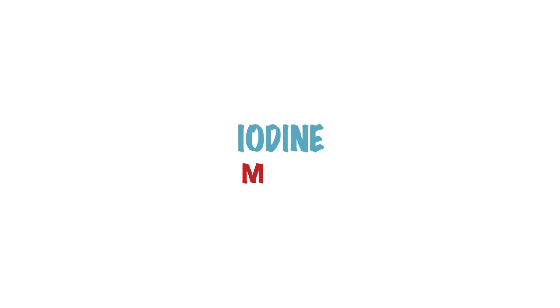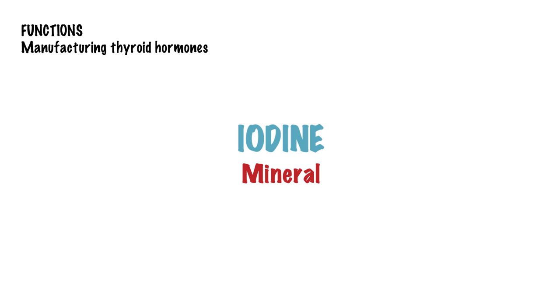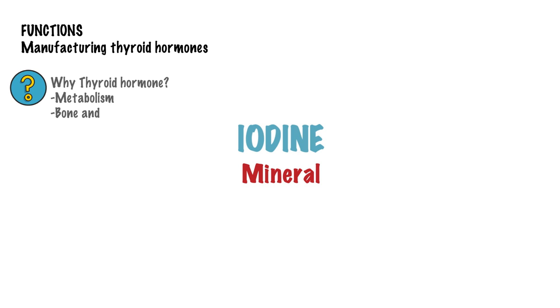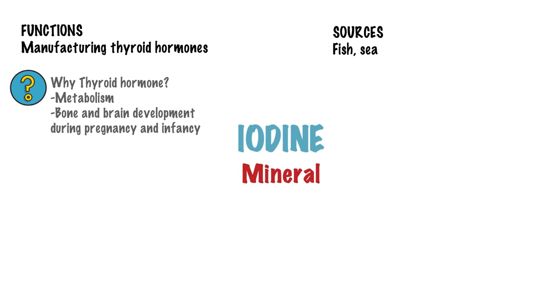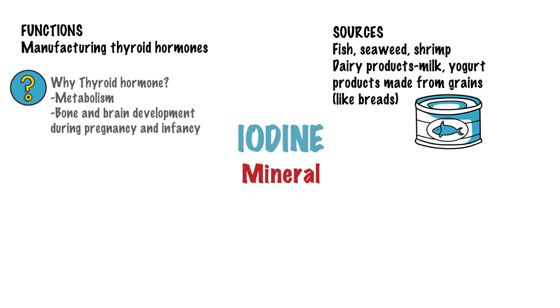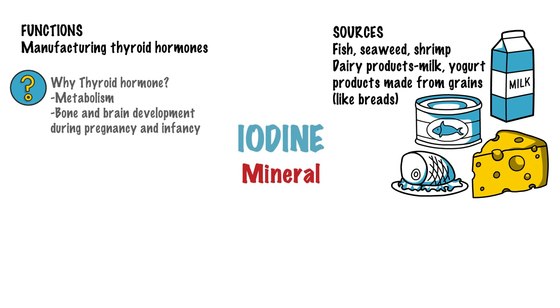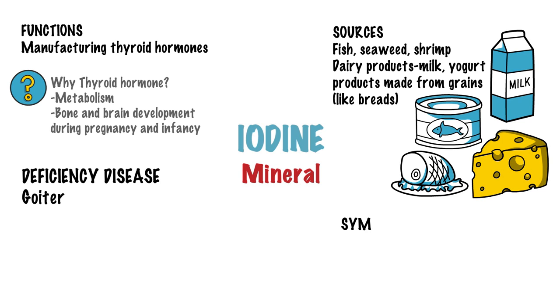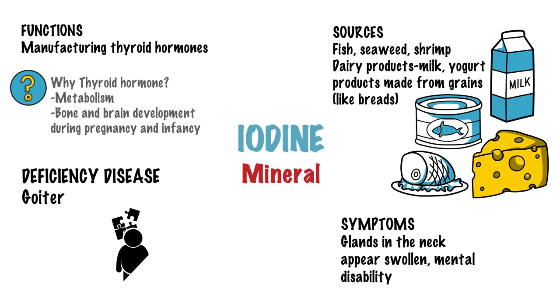Coming to the next mineral: iodine. The body needs iodine to make thyroid hormones. These hormones control the body's metabolism and many other important functions. The body also needs thyroid hormones for proper bone and brain development during pregnancy and infancy. Iodine is therefore fundamentally critical for our body's development. Sources of iodine include fish such as cod and tuna, seaweed, shrimp and other seafoods, as well as dairy products like milk, yogurt and cheese, and grain products like breads and cereals. One will be said to be suffering from goiter if the body becomes iodine deficient. Symptoms of goiter include swelling of glands in the neck and, most unfortunately, mental disability in children.